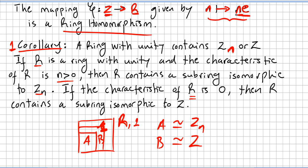So if R is a ring with unity and the characteristic is greater than zero — say the characteristic is n — then this ring with unity will have a subring, let us call it A, and that subring A will be isomorphic to Zn.